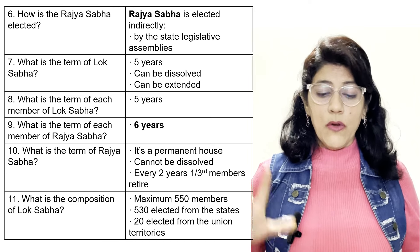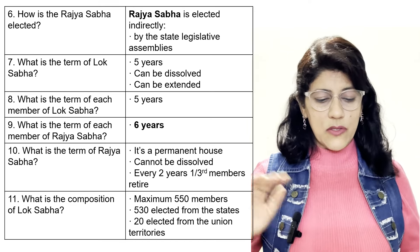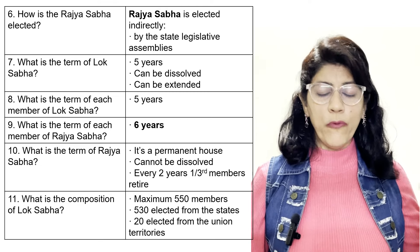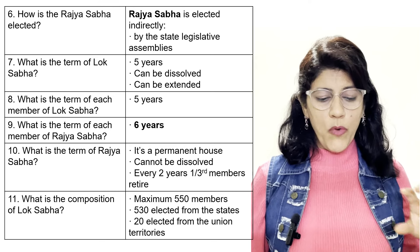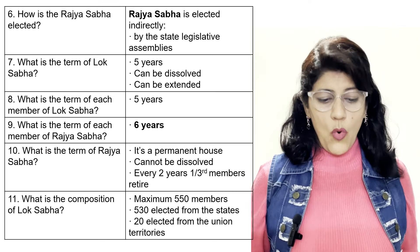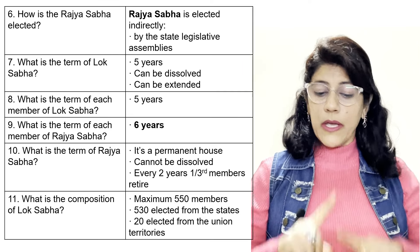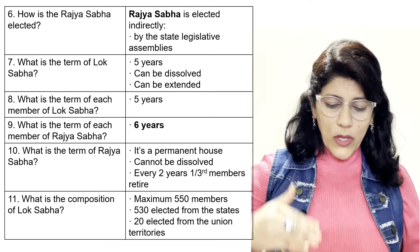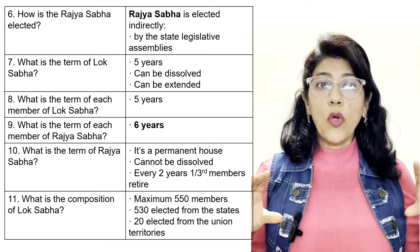What is the term of Lok Sabha? Five years — can be dissolved or can be extended. What is the term of each member of Lok Sabha? Five years. What is the term of each member of Rajya Sabha? Six years. What is the term of Rajya Sabha? It is a permanent house — cannot be dissolved. Every two years, one-third of members retire.